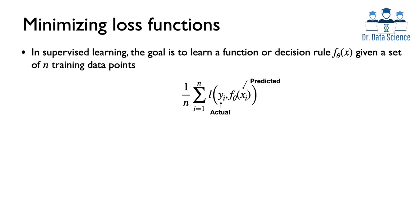Okay so let's get started. In supervised learning, whether you are solving a regression or classification problem, the goal is to learn a function or decision rule, which we show here by f of theta of x, given a set of n training data points. Here I use subscript theta to show all the parameters that this function has, and these are the parameters that we want to learn. The way that we learn these parameters is to form a loss function, also known as cost function, which typically takes the form of the average error for all data points. That's why here we have 1 over n, summation over i equals 1 to n, and inside the summation we have a loss function l which measures the difference between actual and predicted values.